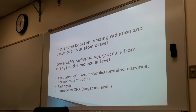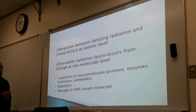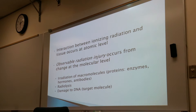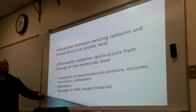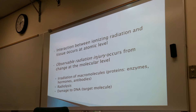At a molecular level, this is where defects start to appear. Radiation of macromolecules includes proteins, which includes enzymes, hormones, and antibodies. Then we'll talk about radiolysis, which is the indirect effect, and then damage to the DNA. The ultimate damage is damage to the DNA — everything else we can recover from, but when there's damage to DNA, the chances of any type of recovery decrease.